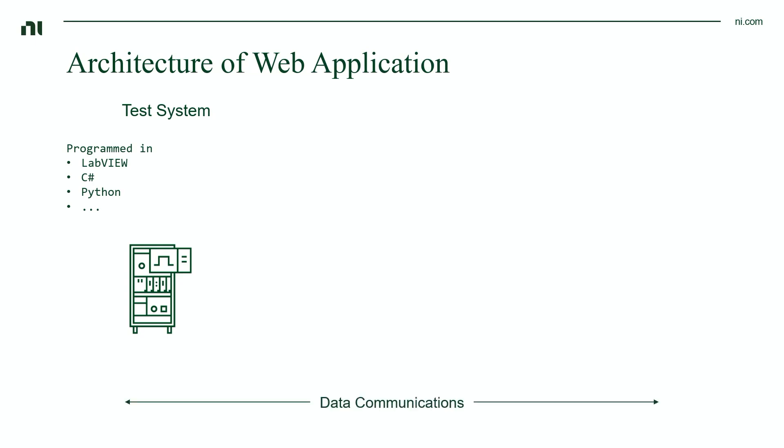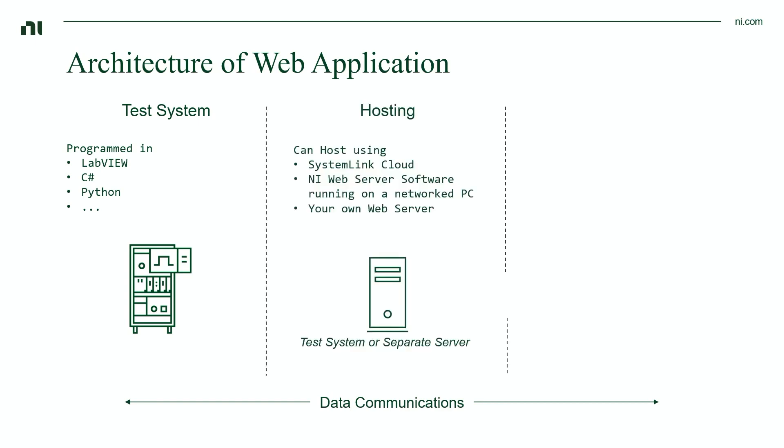And for the most part, this won't change. Now we have our second part — the data communications layer. This spans the entire architecture of our web application and it's doing the data communication and data transfer. Next, we have our hosting. This is where you'll be hosting your web application as well as the data communications layer. You can do this on the same machine as your test system, on a separate server, or using SystemLink Cloud.